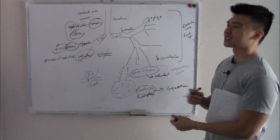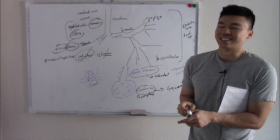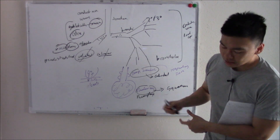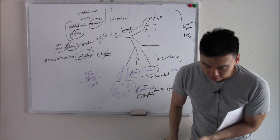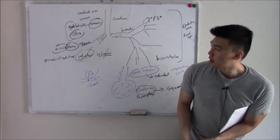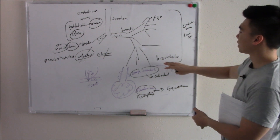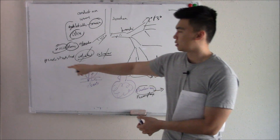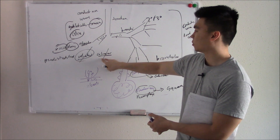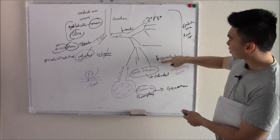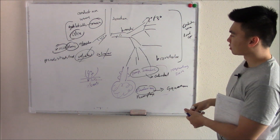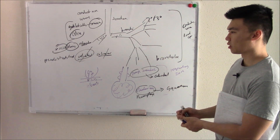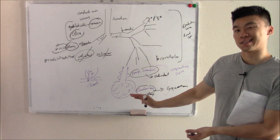Histology for lungs isn't that bad. The epithelium of your conducting zone all the way down to your terminal bronchioles is pseudostratified ciliated columnar. Once you go down to your respiratory bronchioles, you have cuboidal epithelium. Then at your alveoli, you'll have squamous epithelium because you need that gas exchange.